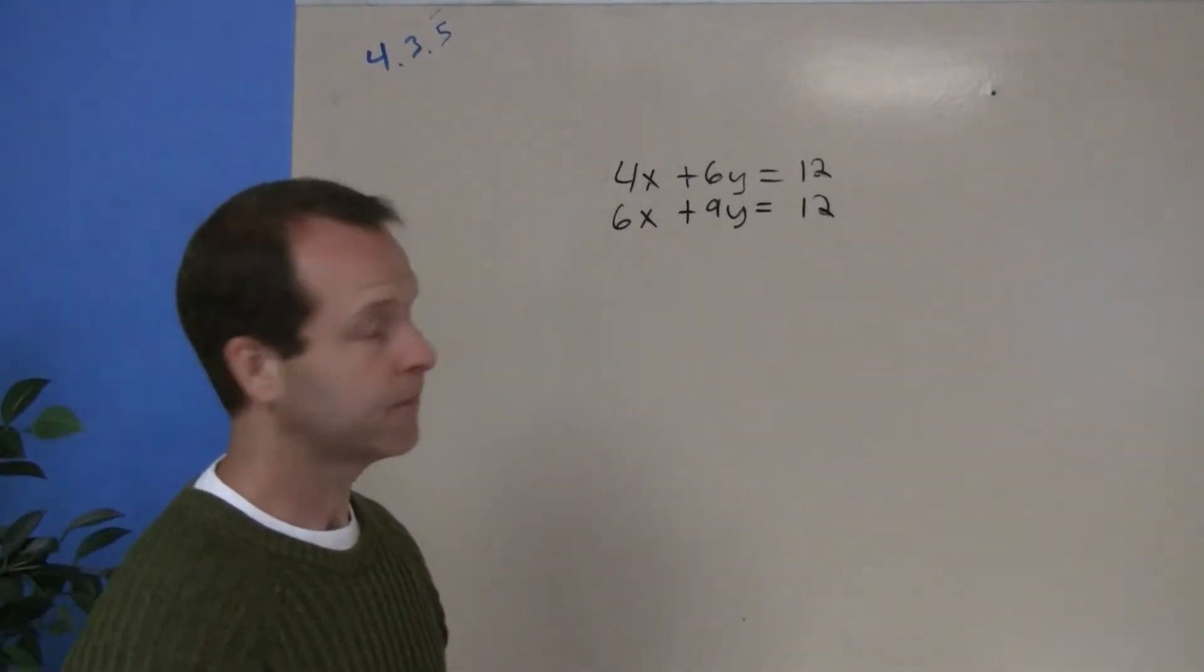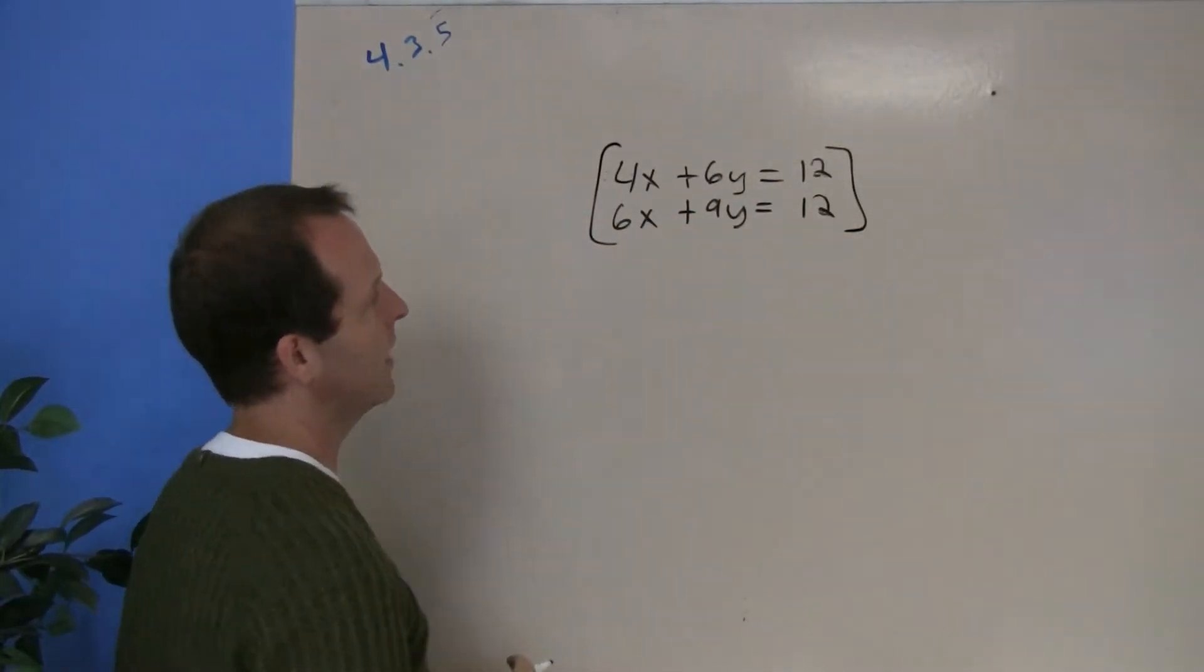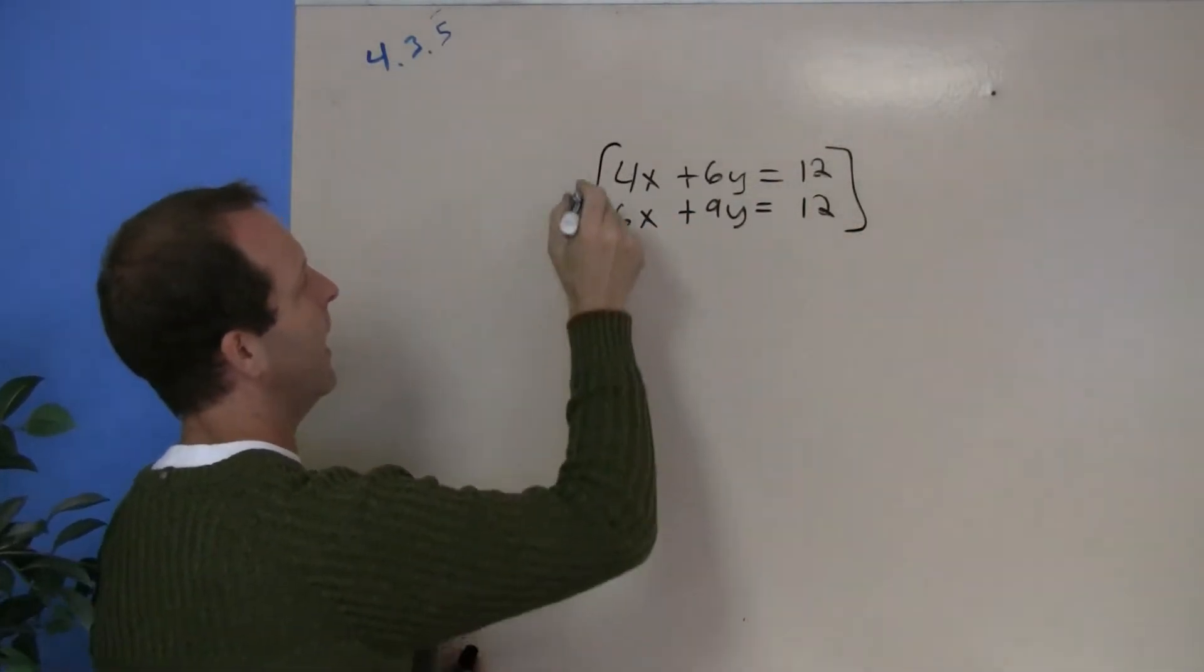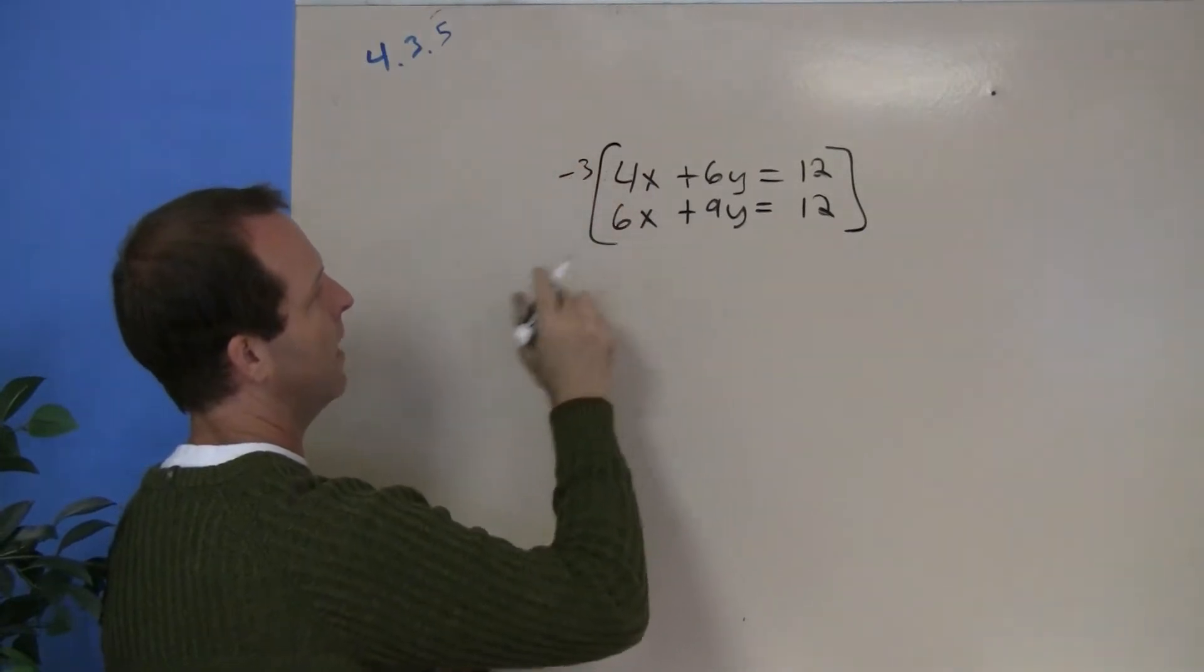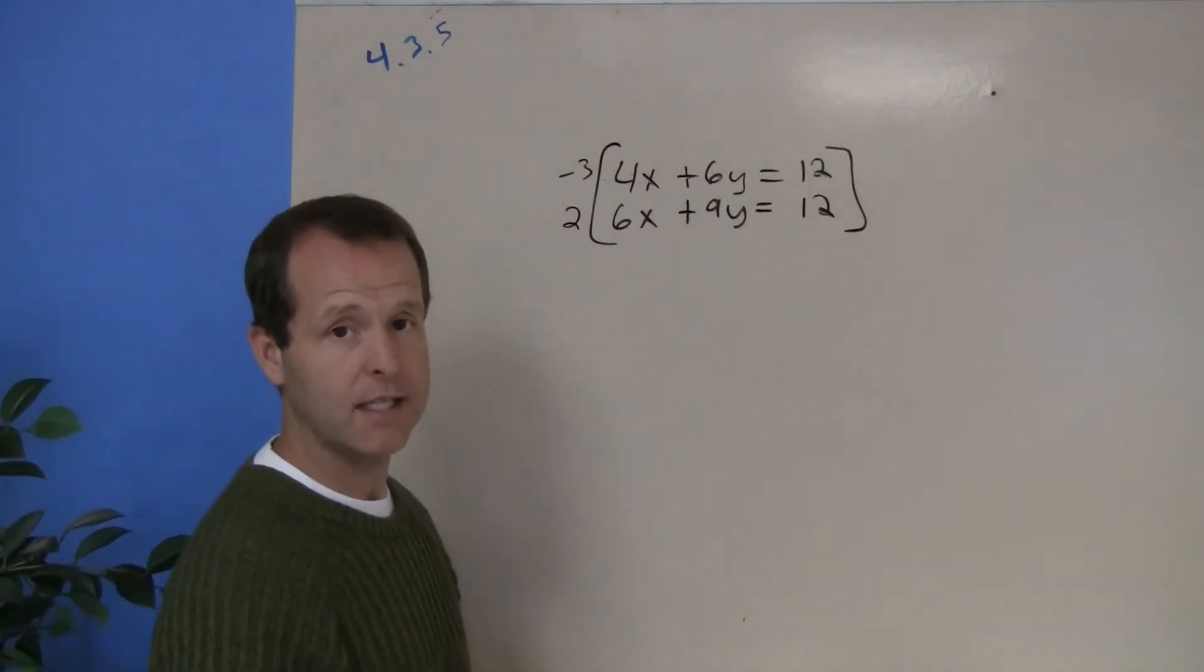Adding this system together, looks like I might multiply the top one by a negative 3, multiply the bottom one by a 2. In doing so I imagine then that the x's may eliminate themselves.